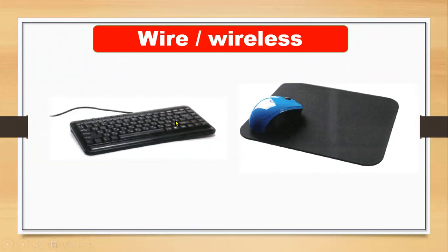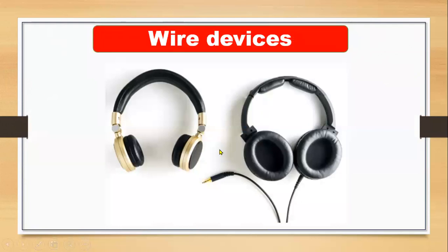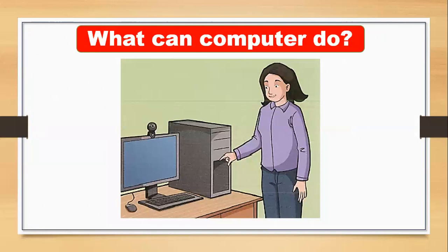Now look at the headphones. This headphone is wireless because it doesn't use any wire — it uses Bluetooth signals to connect to your device so you can listen to sounds. And here, this other headphone uses a wire, so we call it a wired headphone.